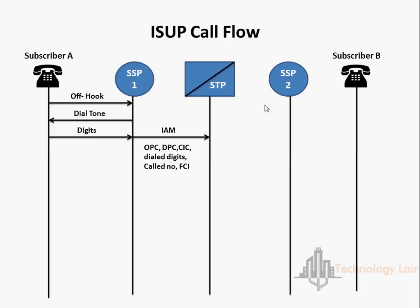The IAM includes the originating point code, destination point code, circuit identification code, dial digits, the calling party number, and the forward call indicators. The IAM is routed via STP to SSP2. The destination SSP checks the dialed number against its routing table and confirms that the called party line is available for ringing. The destination SSP then transmits the ACM to the originating SSP via the STP to confirm that the remote end of the trunk circuit has been reserved.